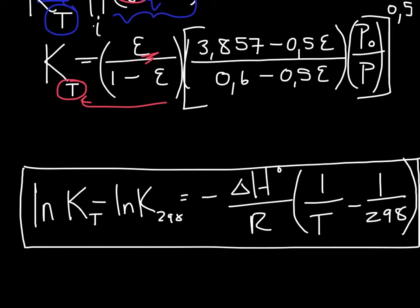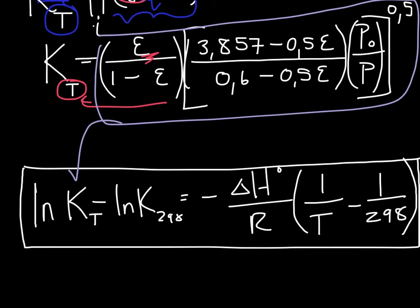After substitution of K in terms of pressure and epsilon into our Van't Hoff equation we have our third and final equation.